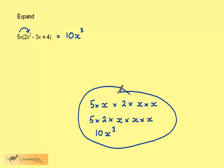This step here doesn't always need to be looked at separately. With a bit of practice, you'll see straight away that 5x times 2x squared is 10x cubed.